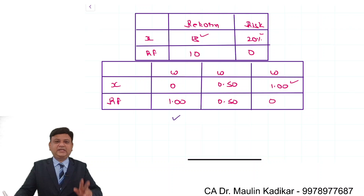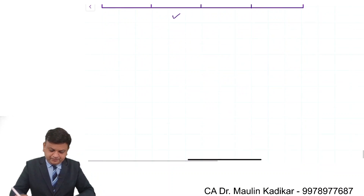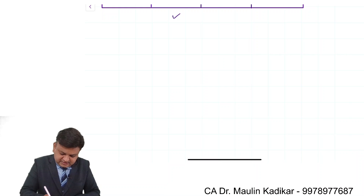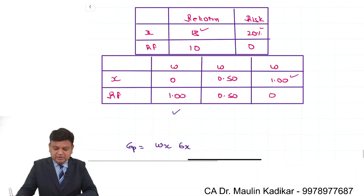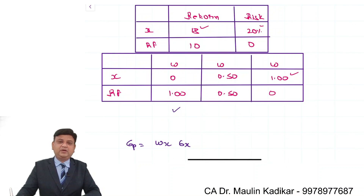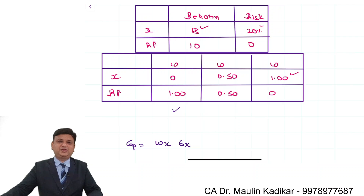For the second portfolio, the investment is made in both securities in equal proportion. In that case we compute the return as a simple weighted average. For the risk of the portfolio, we apply the simple formula: Sigma_P = WX × Sigma_X. This is because when one of the two securities is risk-free, this formula gives the standard deviation of the portfolio.